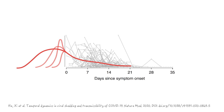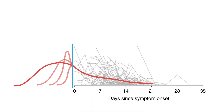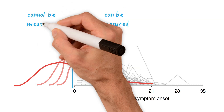The problem is, once patients become known to us because they develop disease, we can measure viral shedding and thereby infectiousness. But we usually don't know who will become infectious, so we can't measure that part of the curve. We can determine that left part of the curve by studying transmission pairs.